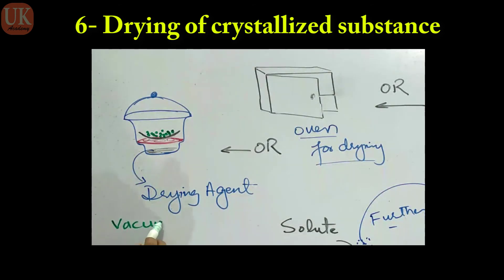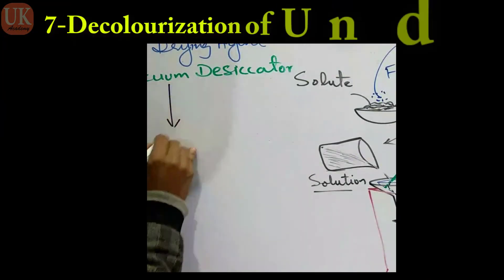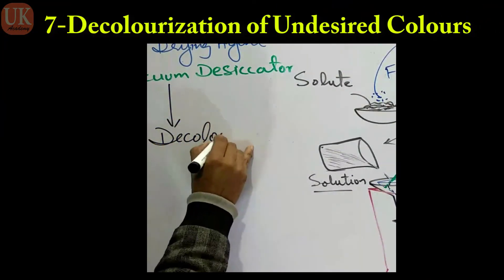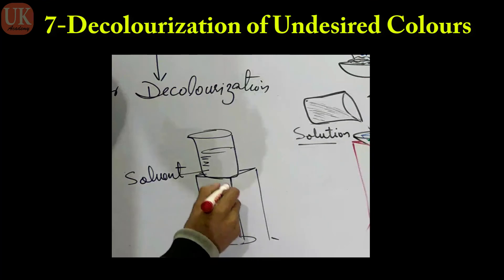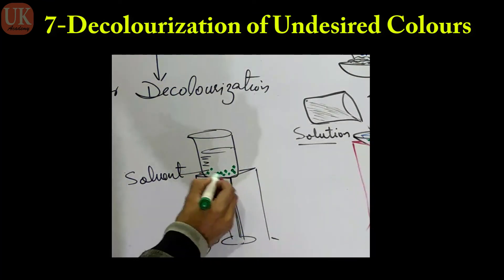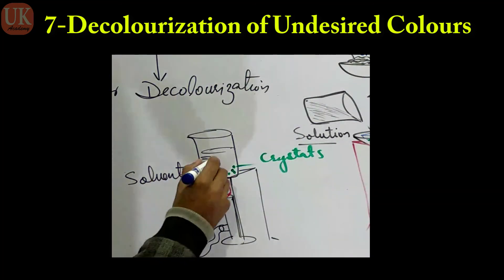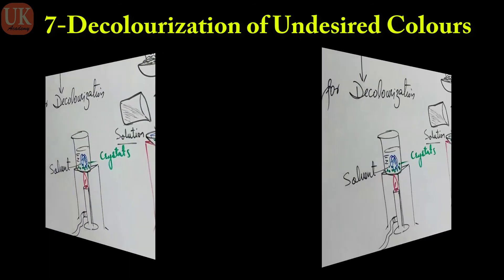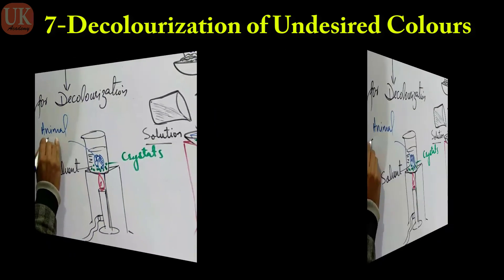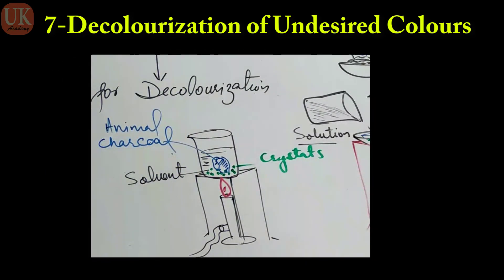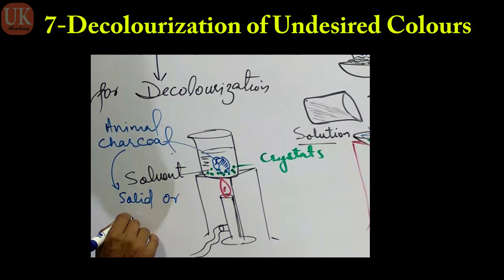Ab last step ke baare mein — decolorization of undesirable colors. Ye step tabhi karna hoga jab haasil crystals mein koi aisa color ho jo originally pure substance mein nahi hota. Remove karne ke liye crystals ko finely powdered animal charcoal — jo ek decolorizing agent hai — ki maujoodgi mein boil karna padega. Animal charcoal color ko absorb kar lega aur crystals ka pure ya colorless roop haasil ho jaayega.